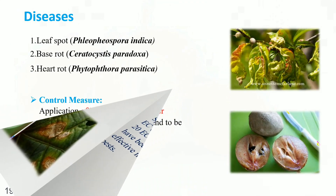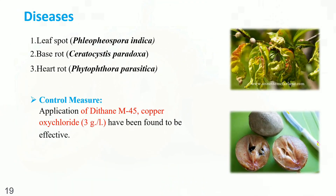Diseases include leaf spot, base rot, and heart rot. Control measures: Application of Dithane M-45 or copper oxychloride at 3 g per litre has been found to be effective.